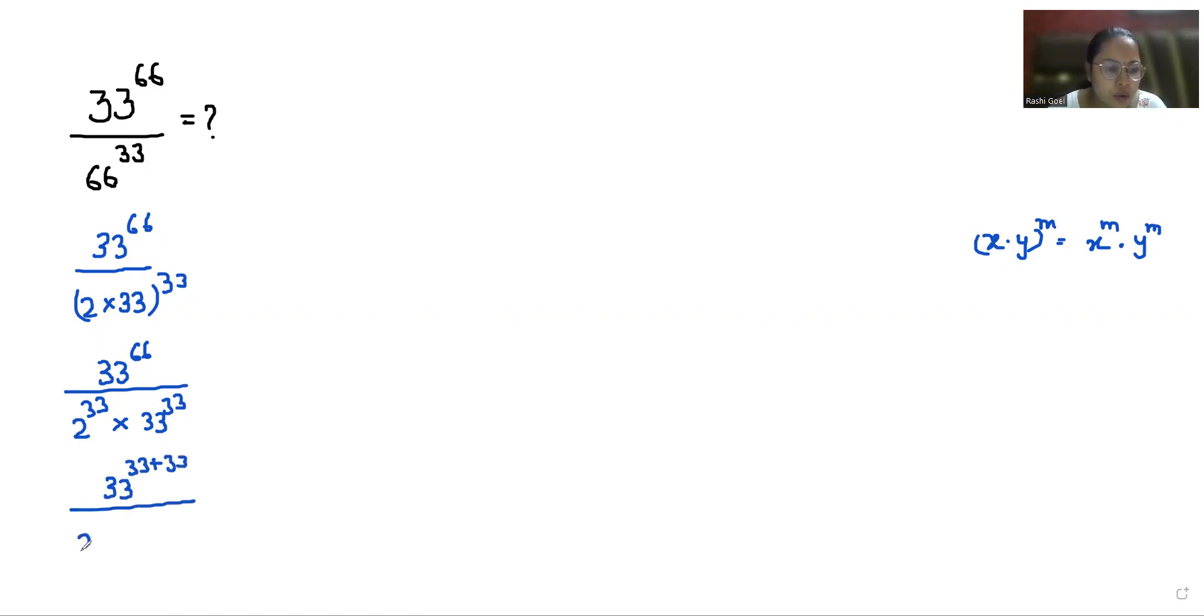By 2 power 33 times 33 power 33, another exponent rule: x power m plus n we can write it as x power m times x power n. So 33 power 33 times 33 power 33 by 2 power 33.